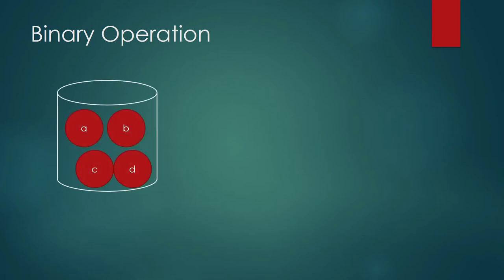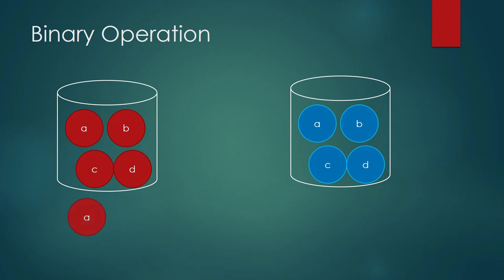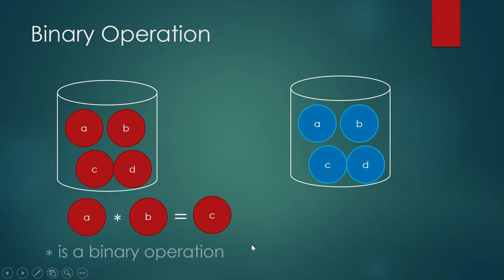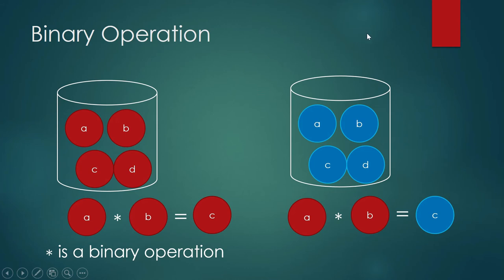I will explain the concept of binary operation through an animation. Think of two jars containing different marbles — red and blue. You pick two marbles, forming an ordered pair, and apply the function star. If star pairs (a, b) to an element c that is also found in the same jar, this is a binary operation. However, if the result c is found in a different jar, then star is not a binary operation.